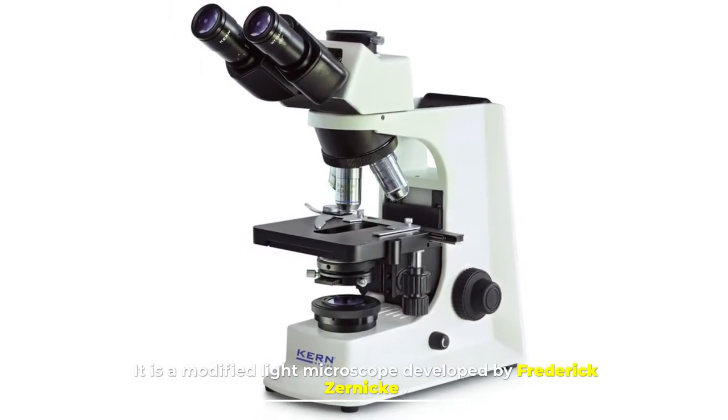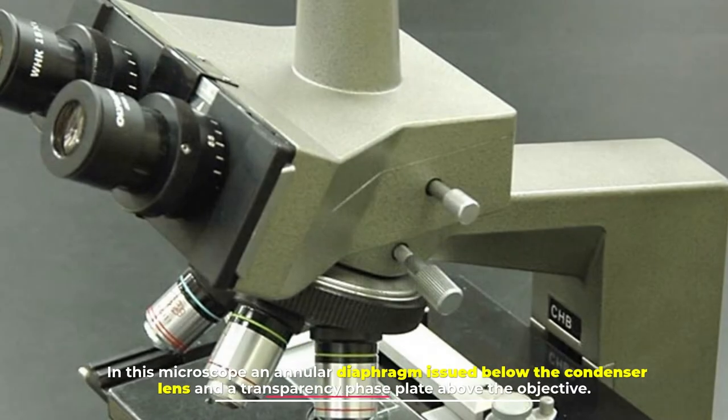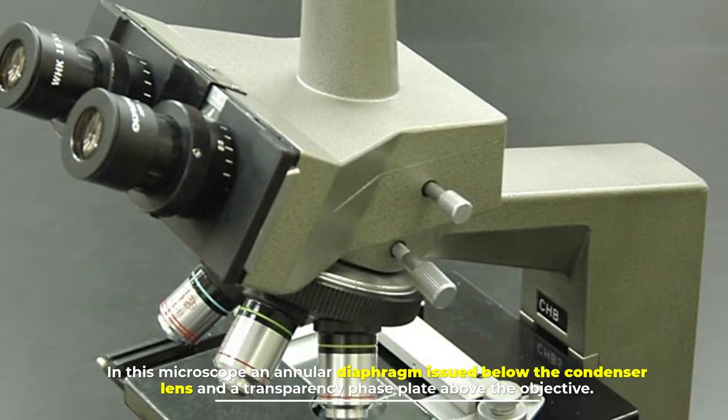Number two: phase contrast microscope. It is a modified light microscope developed by Frederick Zernike. In this microscope, an annular diaphragm is used below the condenser lens and a transparency phase plate above the objective.